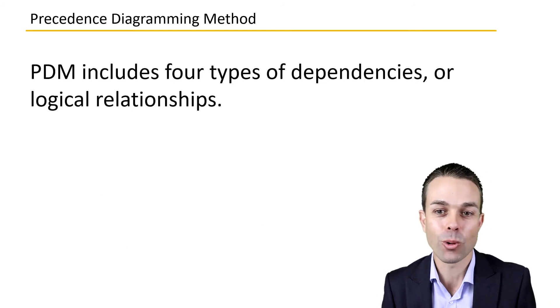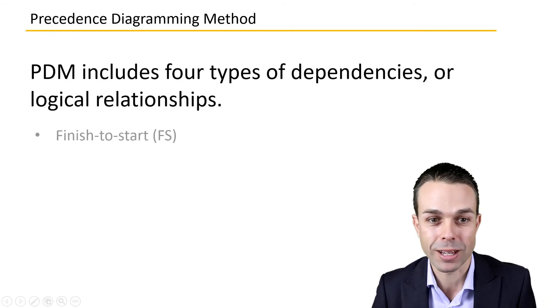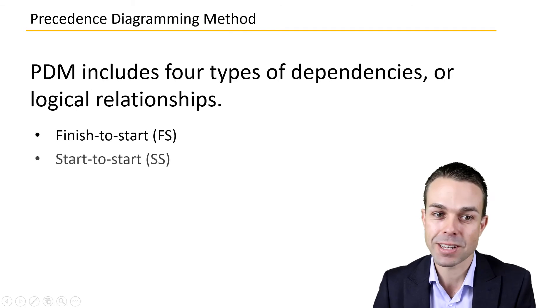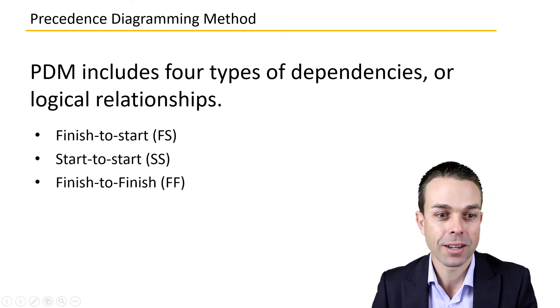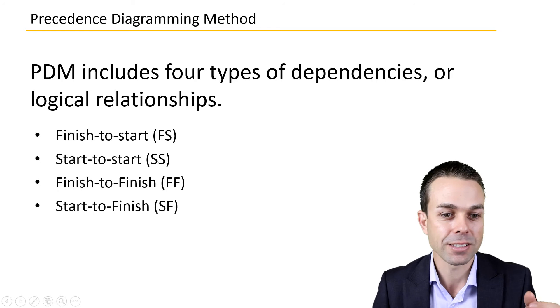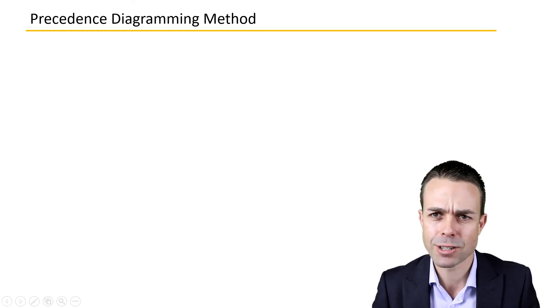This includes four types of dependencies or logical relationships: finish-to-start, start-to-start, finish-to-finish, and start-to-finish. Let's delve into them in more detail.